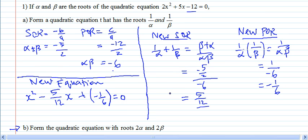Now when you're here, please do not leave your equations like this. Normally equations, you try to remove the fraction. So what you can do is multiply the entire equation with the 12. What you will get is 12x² - 5x - 2 = 0.